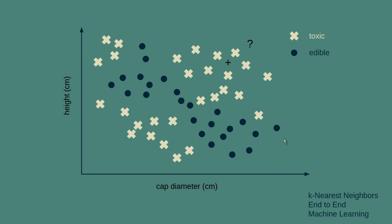What we'd like to be able to do, the classification problem, is given a new mushroom where we know the height and cap diameter, we'd like to be able to determine is it toxic or edible? Can we use this set of examples to classify a new mushroom? The k-nearest neighbors approach is to look and find the closest neighbors to the point that we care about. K refers to the number of neighbors that we try to find. In this case, there are five neighbors within that circle.